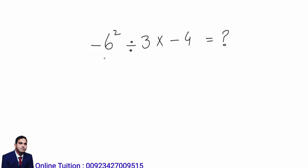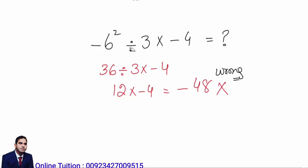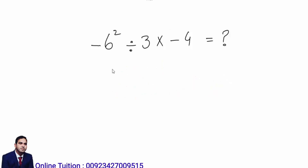Now the next question: negative 6 squared, divided by 3, multiplied by negative 4. Someone might do 36 divided by 3 equals 12, then 12 multiplied by negative 4 to get negative 48. But this is not the correct answer — this is wrong. We need to identify one mistake made at the start of the question. If you can point out the mistake, comment under the video.